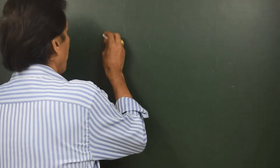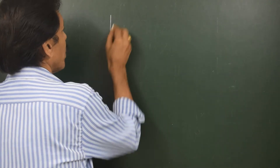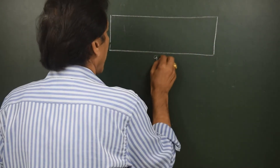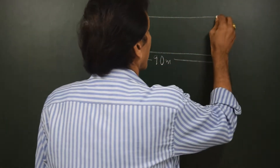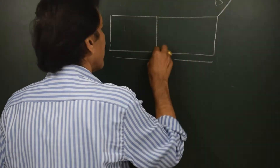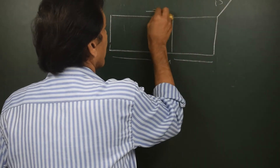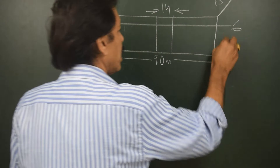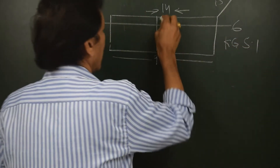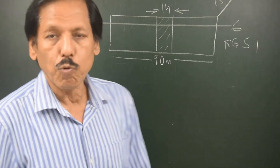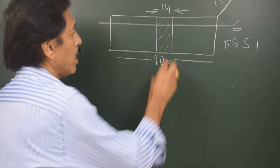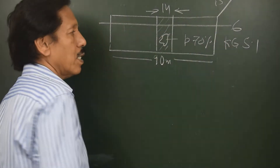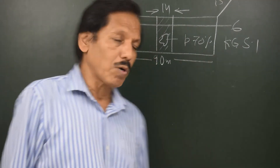Now let's consider a permeability of 70%. We'll take the same ship — 90 meters long, 15 meters wide, with a compartment length of 14 meters. The initial draft is 6 meters, KG is 5.1 meters, and the entire compartment is filled with homogeneous cargo of permeability 70%. This compartment is damaged — what happens to the GM?